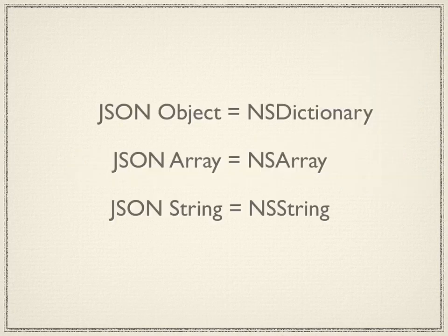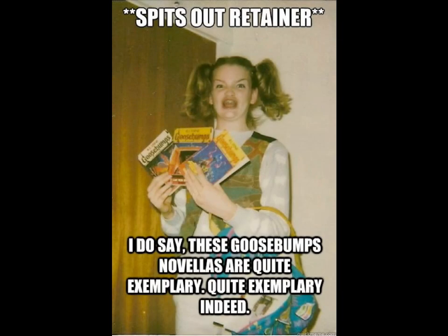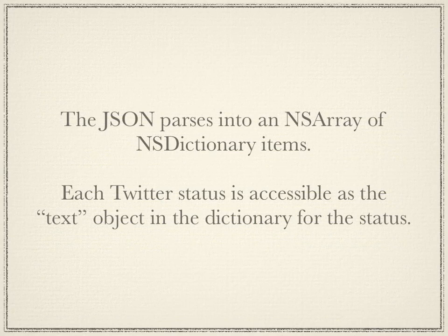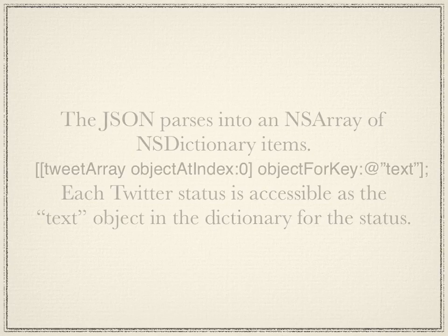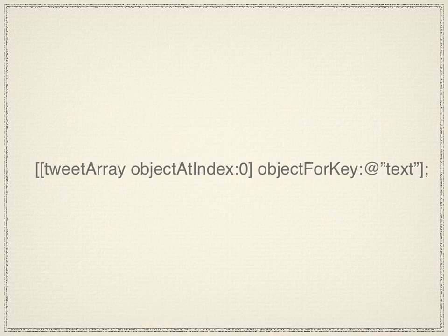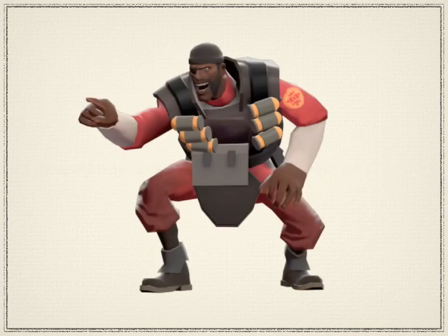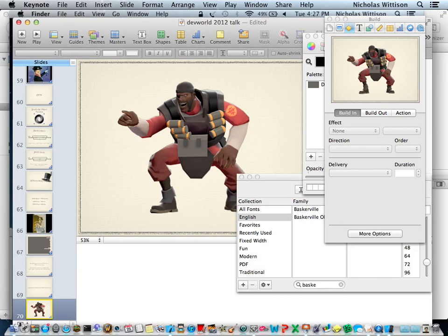Now we can speak the language we need. The JSON parser turns everything into NSArrays and NSDictionaries. Each Twitter status is accessible using the 'text' key in the dictionary. Using the tweet array we've made, we can access an individual element, call objectForKey:@"text", and it will provide the string the person typed on Twitter. With that, I'll move to the next demo.